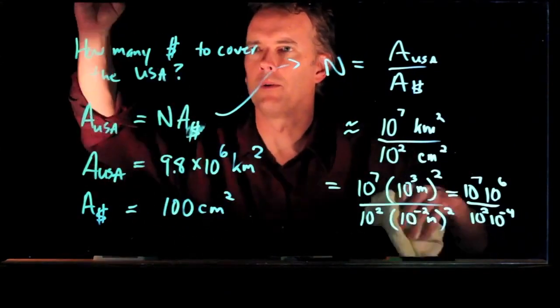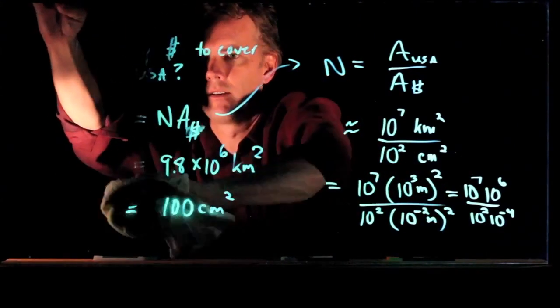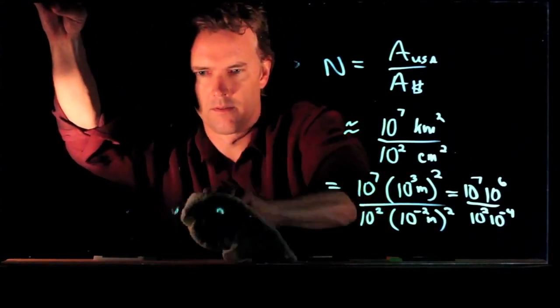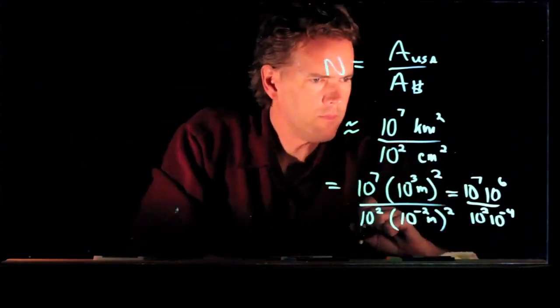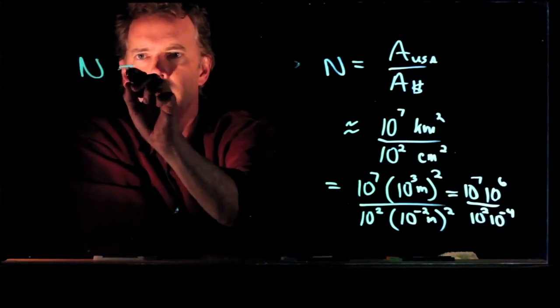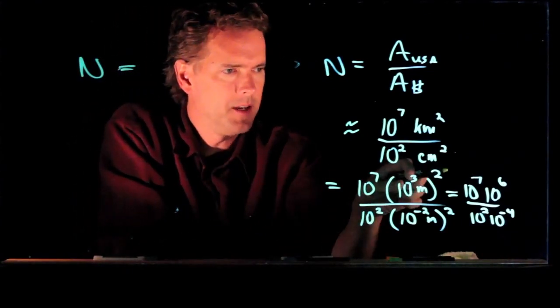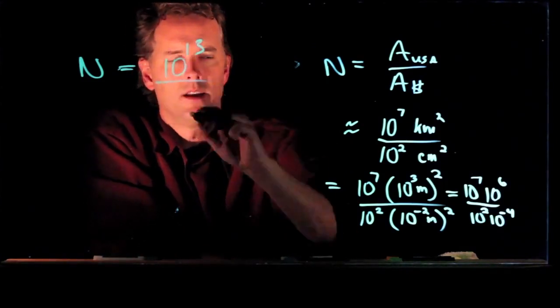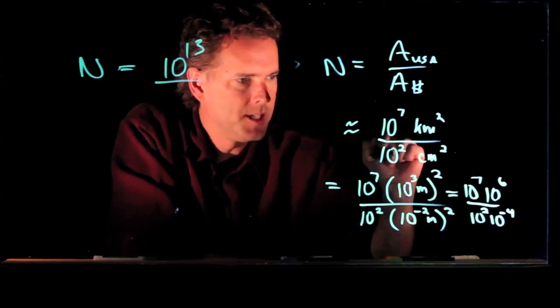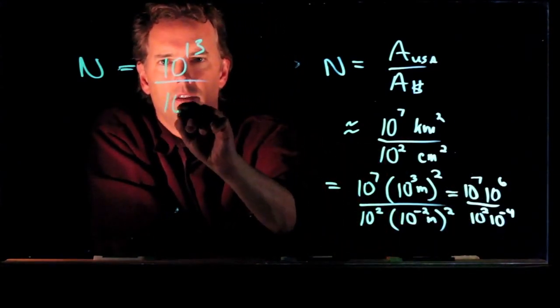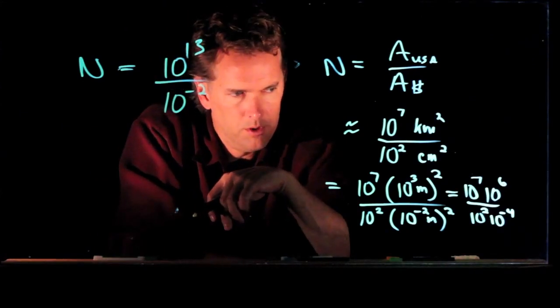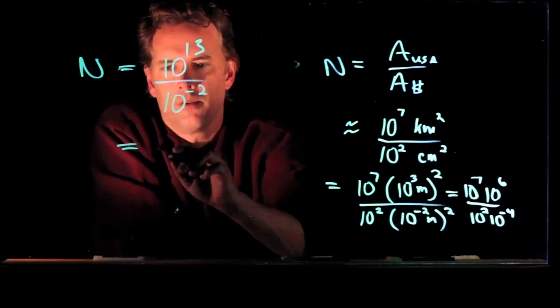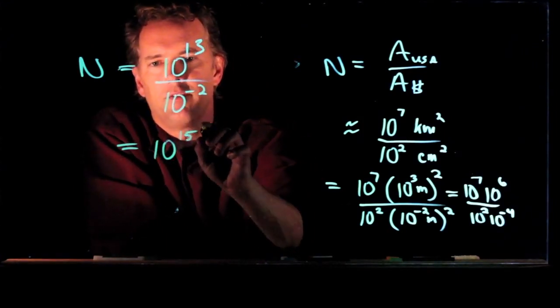And so if we run all these numbers, what do we get? Let's make a little room over here. We get N equals the top 10 to the 7 and 10 to the 6. That is 10 to the 13. And in the bottom, we had 10 to the 2 and 10 to the minus 4, so that's a 10 to the minus 2. And if I have 10 to the 13 over 10 to the minus 2, that becomes 10 to the 15.